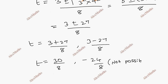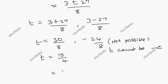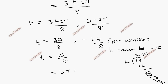Time cannot be negative, so t cannot be negative. Therefore, the time is 30 by 8, which simplifies by dividing by 2 to give 15 by 4. Dividing 15 by 4: 3 times 4 is 12, remainder 3, giving 3.75 seconds. So the answer is 3.75 seconds.